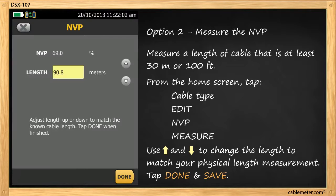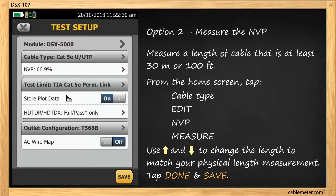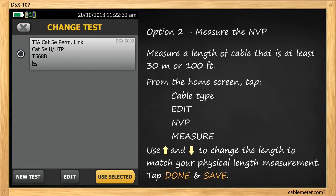Now in this case, with my MVP set at 69%, it thinks the length is 90.8 meters. Actually, the length of my link is 88 meters. So I'm going to change the length so it says 88 meters, and you'll notice the MVP value is also changing at the same time. The measured MVP of this cable is 66.9%. Tap Done, Save, and select it.